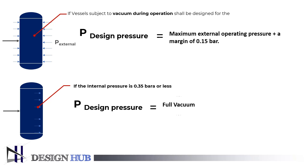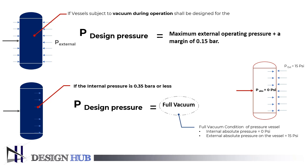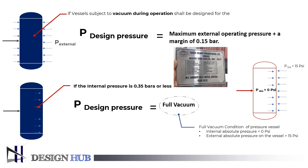Now the question arises, what is full vacuum condition? Full vacuum condition of the pressure vessel is defined in ASME: internal absolute pressure equals 0 psi, external absolute pressure on the vessel equals 15 psi. This is the nameplate for the pressure vessel designed at full vacuum condition.